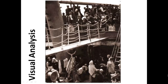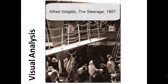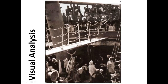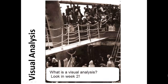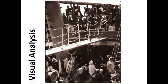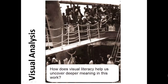We're going to be looking at a very famous artwork by Alfred Stieglitz and we're going to be looking at it in terms of a visual analysis. First we're going to discuss it in terms of visual literacy, looking at the elements and principles. Then I'm going to look at it in terms of social meaning and how those elements and principles actually create an image that has deeper meaning than what is first observed.